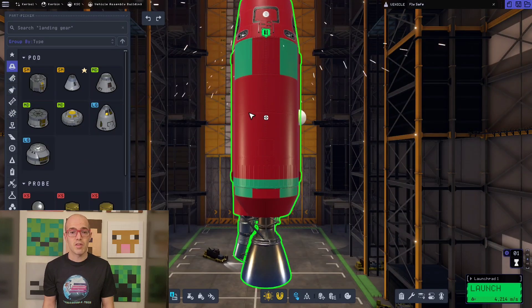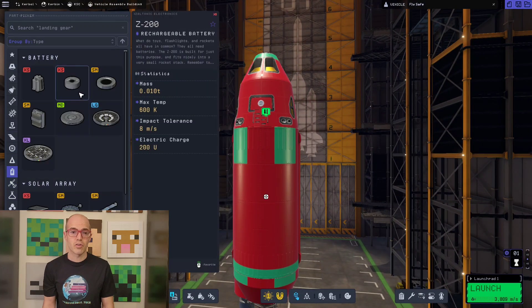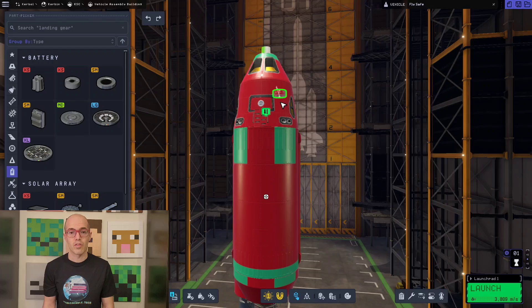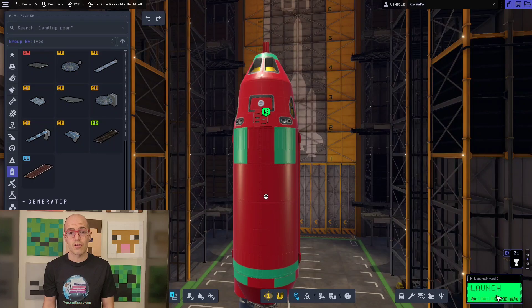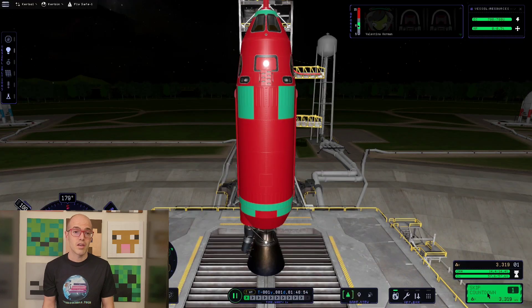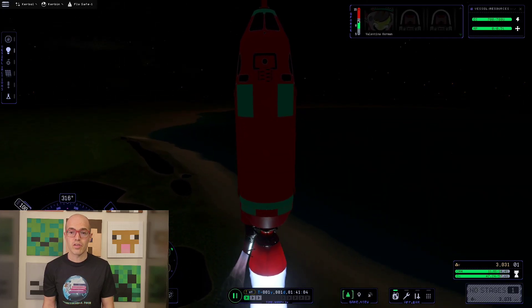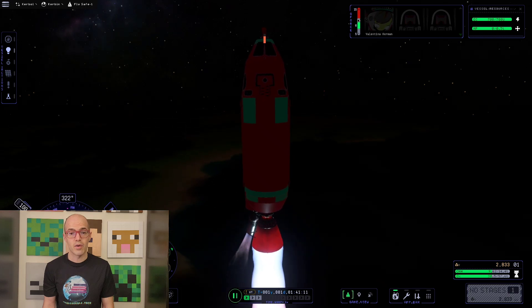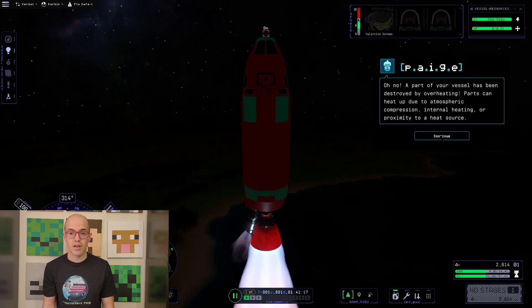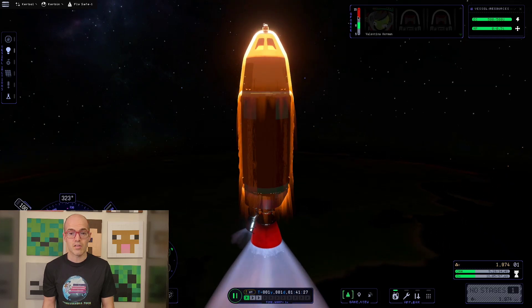In the space flight simulation game Kerbal Space Program, players manage the electrical systems of their spacecraft as they explore the solar system. Players must balance power generation consumption and distribution to ensure the functionality of critical systems such as communication, propulsion, and life support. The game's depiction of electrical systems reflects real-world principles of electron flow and circuitry, emphasizing the significance of electron behavior in spacecraft engineering and space exploration.